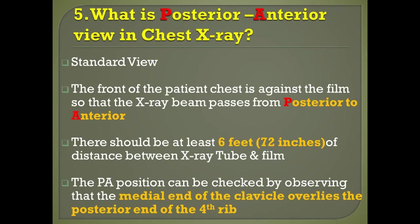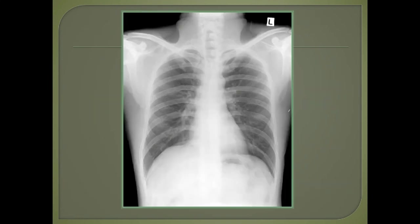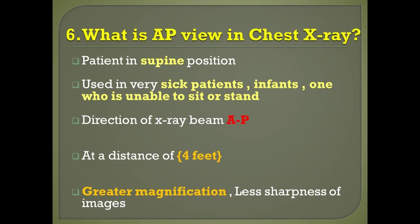Question number five: what is the posterior-anterior (PA) view in chest X-ray? It is the standard, most commonly taken view. The front of the patient's chest is kept against the film so the X-ray beam passes from posterior to anterior. There should be at least six feet or 72 inches of distance between the X-ray tube and the film. The PA position is confirmed by observing that the medial end of the clavicle overlies the posterior end of the fourth rib. You can see in the image that both clavicles overlie the fourth rib, are not horizontal, and the scapula does not overlap the lung fields.